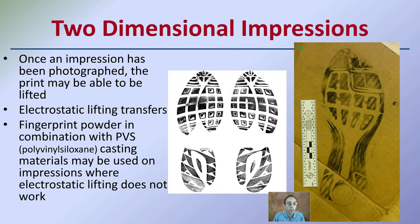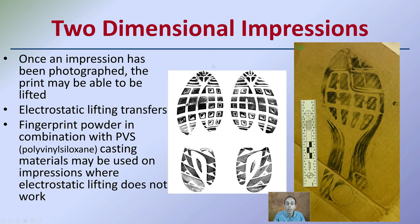Looking at two-dimensional impressions — once an impression has been photographed, the print may be able to be lifted off the surface. Electrostatic lifting can help transfer it, and fingerprint powder can be used in combination with PVS, which is polyvinyl siloxane, a casting material that can be used for impressions where electrostatic lifting may not work. This is how we can potentially lift that print to be examined in the lab.